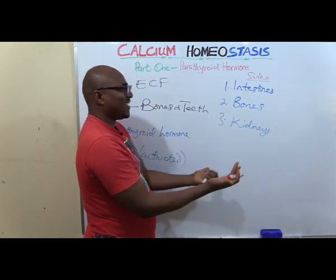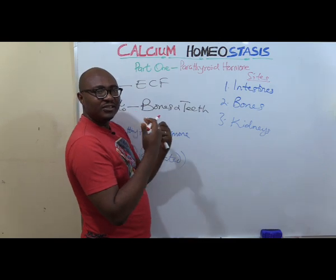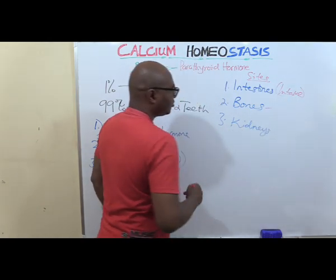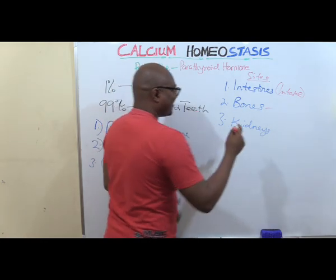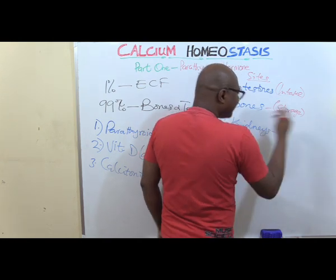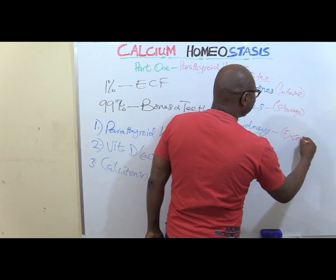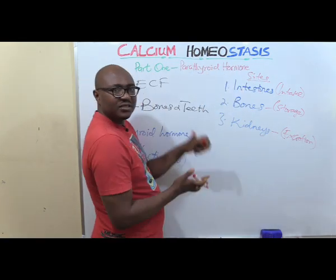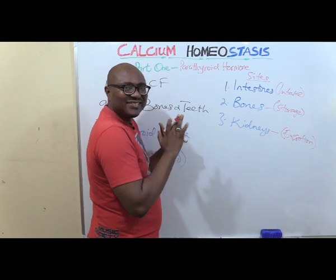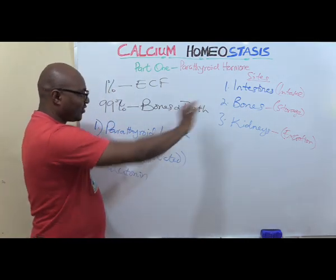The intestine is where you take in calcium from your food — that's intake. The bones are involved in storage of calcium — 99% of it. The kidneys mainly handle excretion — they determine how much calcium you excrete. If you have too much calcium, you might excrete more from the kidneys; if you have less, the kidney might reduce its excretion. It's an interplay of these three sites and three hormones.